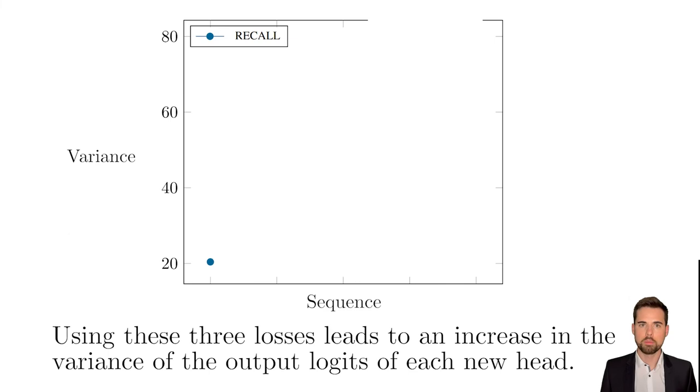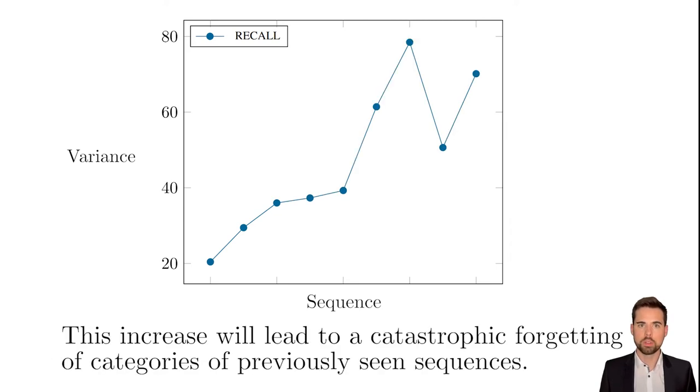However, as mentioned before, using a cross-entropy loss increases the variance over the logits for each added new sequence. This increase pushes new categories towards 1 and old categories towards 0, even if the logit value is perfectly regressed. This also explains why the forgetting gets more significant over time.